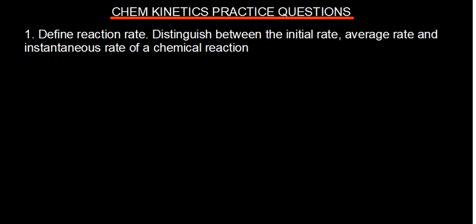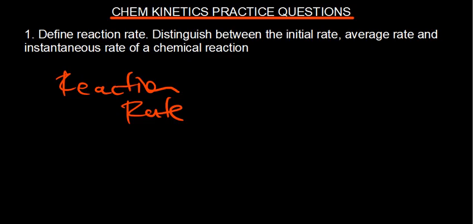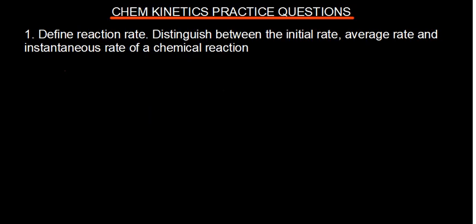Question 1: Define the reaction rate. The reaction rate describes how fast a chemical reaction progresses. It can be defined as the rate of change of the concentrations of the reactants with respect to time, or per unit time.